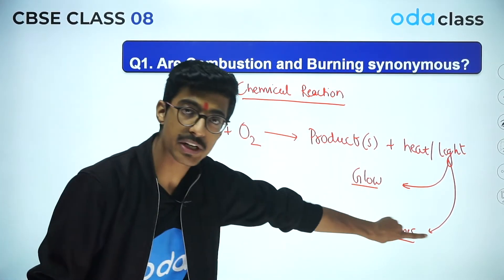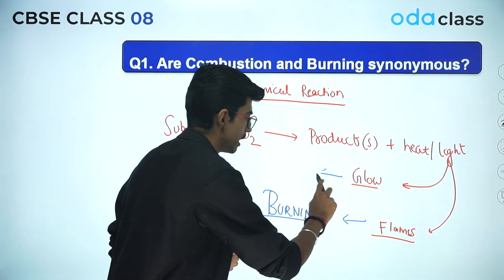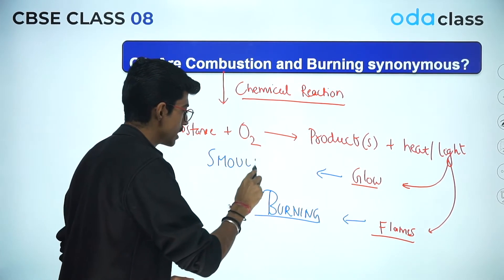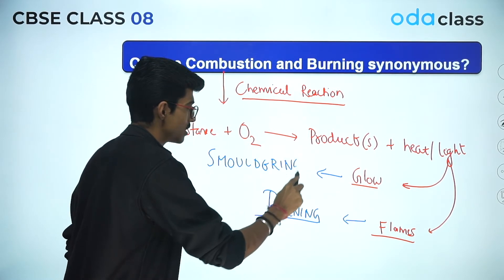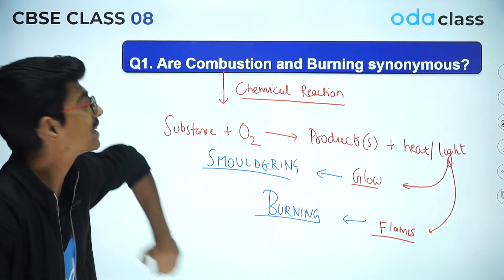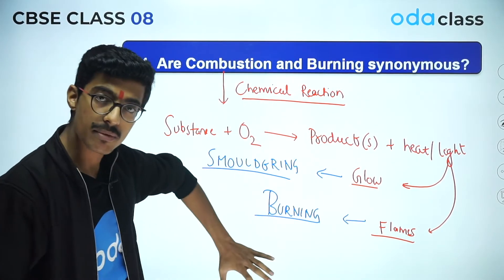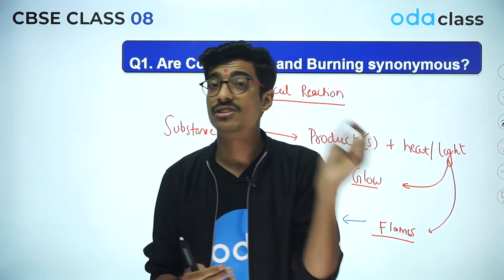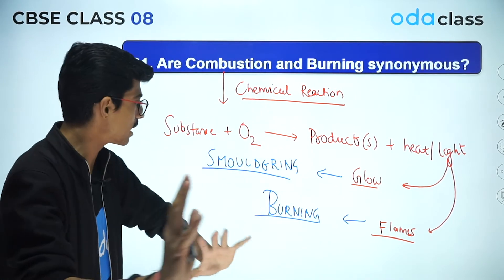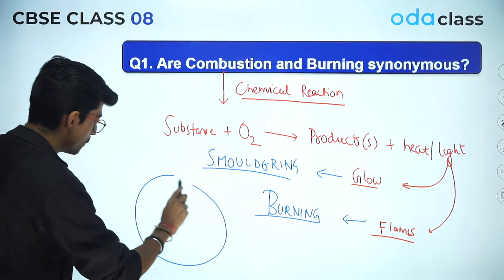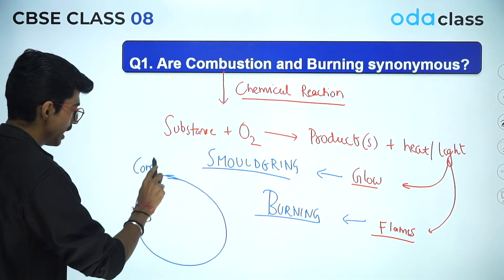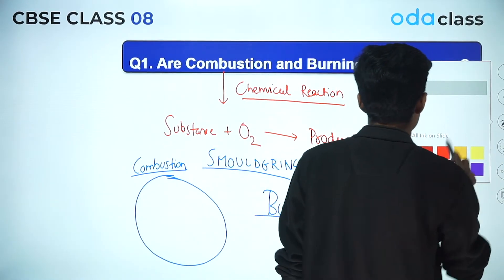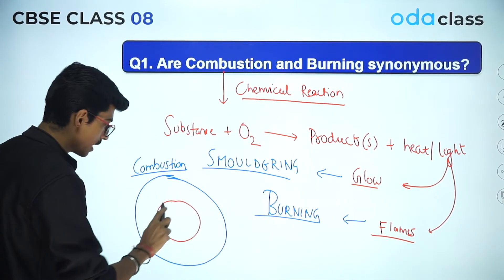But if it is producing flames — like when you light a candle, the flame goes upward, or if you light wood, you also get flames — so if this process is producing flames, then this specific process is known as burning. And if it is producing a glow, like in the example of charcoal, then it is known as smouldering. You heard me correct — that is known as smouldering.